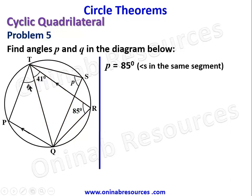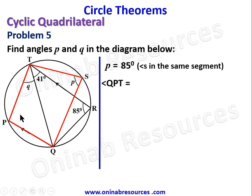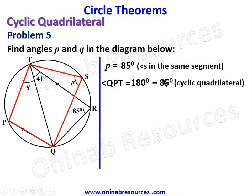To find Q, we first need another angle. Looking at the cyclic quadrilateral, angle QPT equals 180 minus 85 degrees — opposite angles of a cyclic quadrilateral are supplementary — giving 95 degrees.